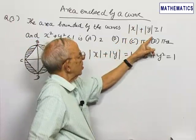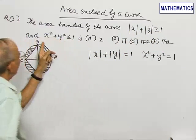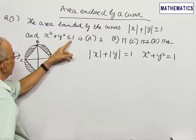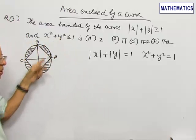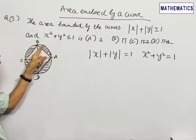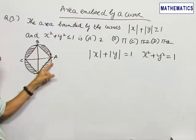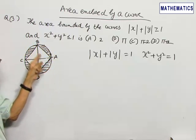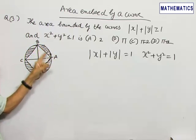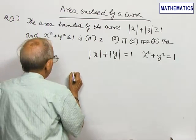Looking at the problem, the area given by the curves |x| + |y| ≥ 1 and x² + y² ≤ 1—the required area is the area between the circle and the square, the shaded area.